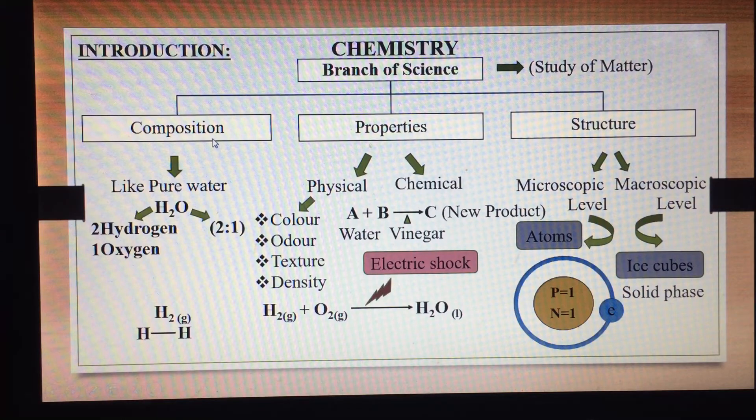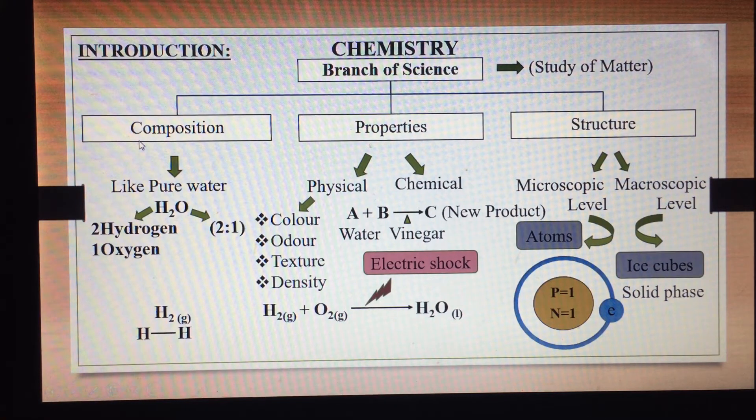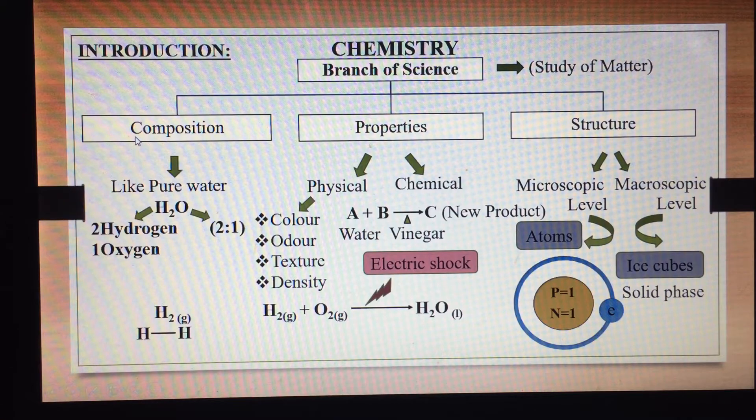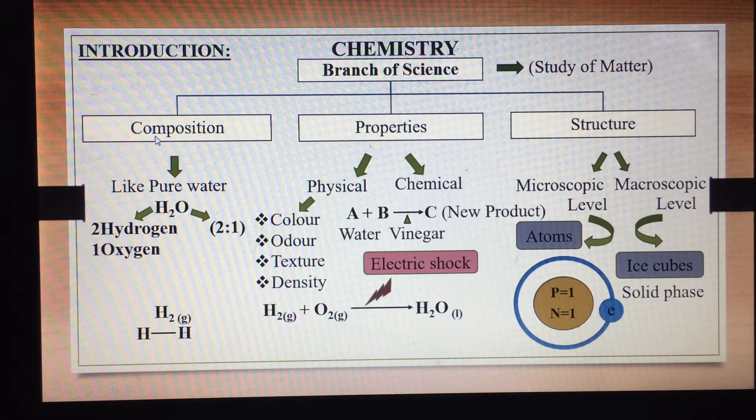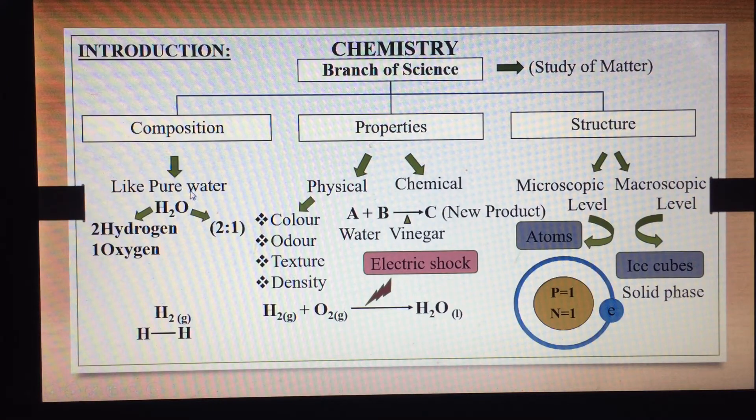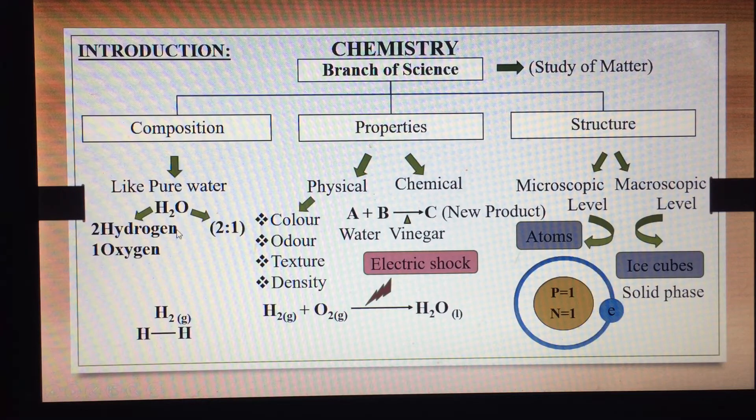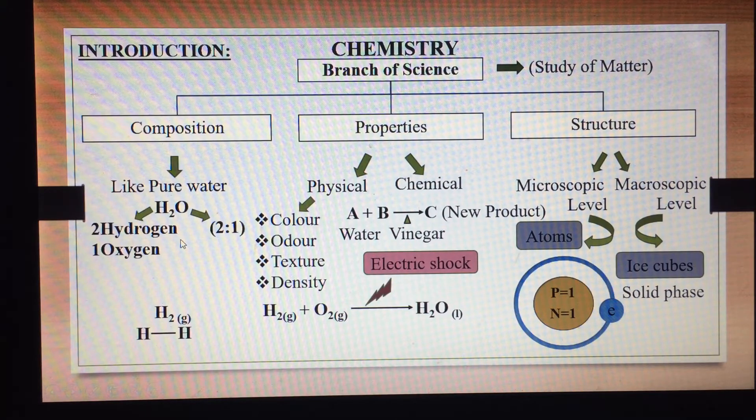Matter ke baare mein joh hum pehli cheez dekhte hain woh hai composition. Composition mein aap kisi bhi matter ki binawat, us mein maujud elements, aur unki amounts ka tayun karte hain. For example, pure water, iska formula hota hai H2O. Isko dekhkar aap andata laga sakti hain ki ismein 2 hydrogen aur 1 oxygen maujud hai. Aur is hesaab se iski ratio hai 2 ratio 1.